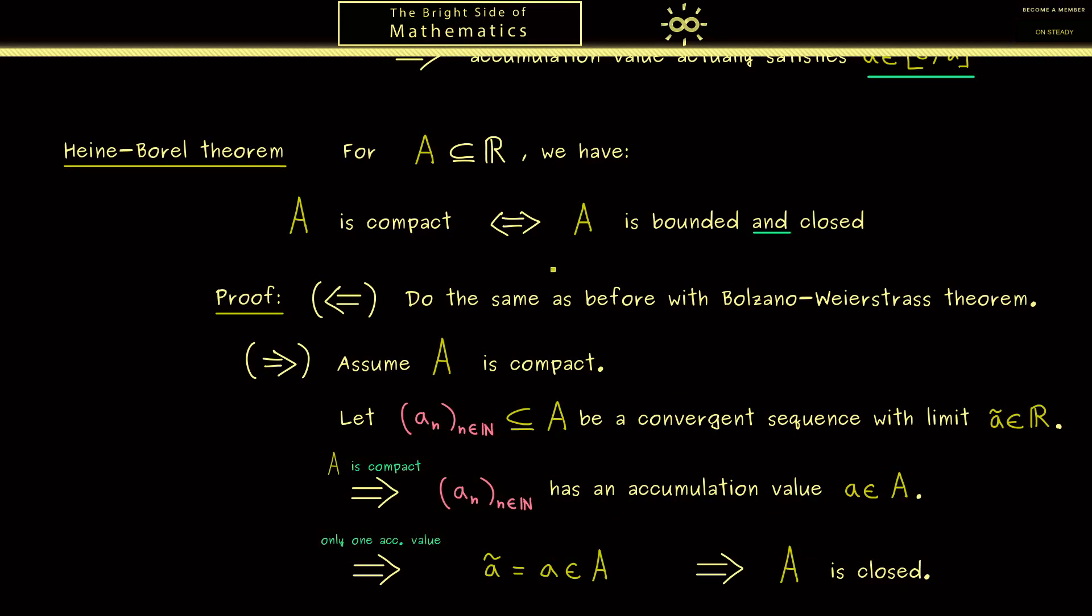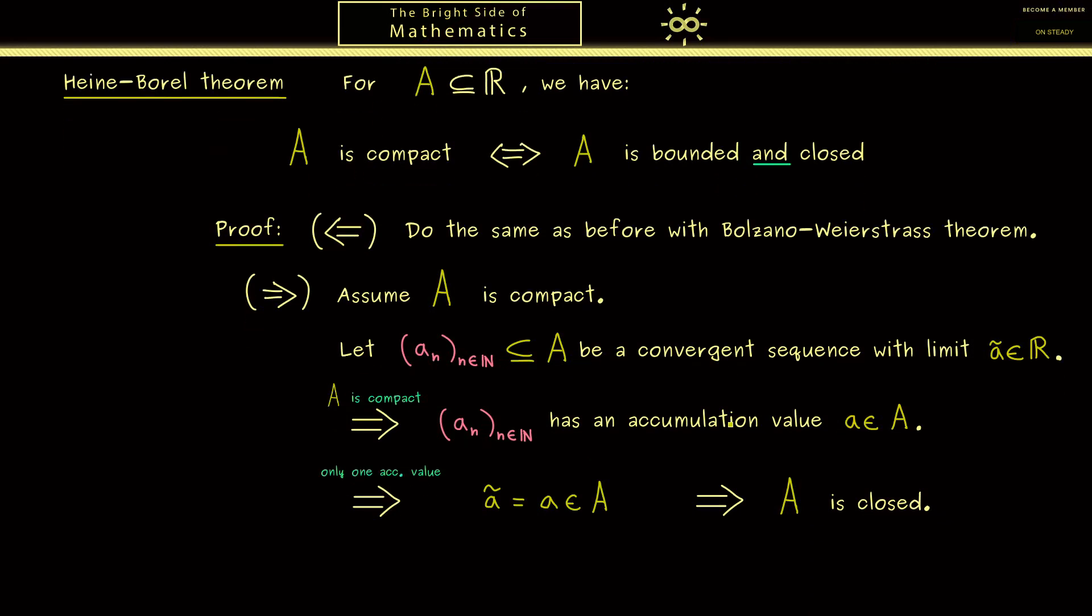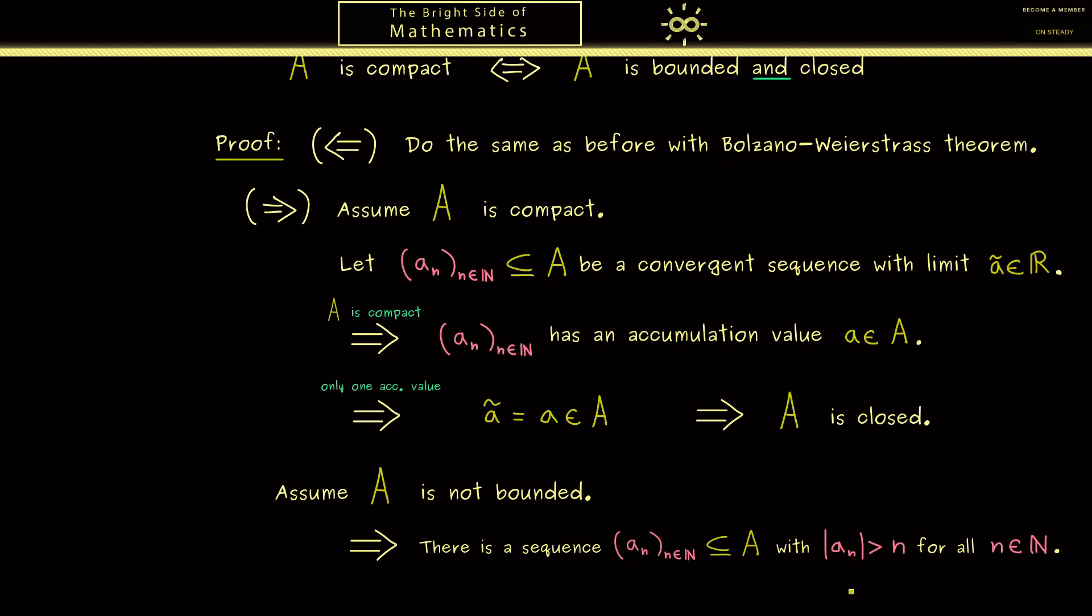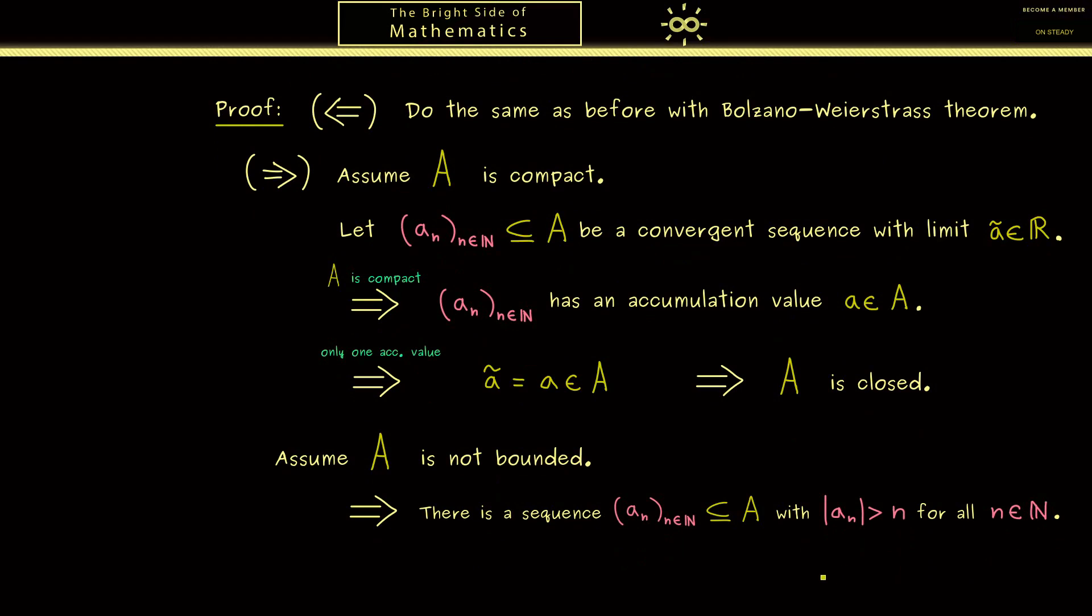Ok so it remains to show that A is bounded as well. And in order to show this we use a proof by contraposition. More concretely this means we assume that A is not bounded and want to show that A is not compact. Now whenever we have an unbounded set we can construct a sequence in this set. Such that all sequence members fulfill that the absolute value of aₙ is greater than n. And this should work for all natural numbers n.